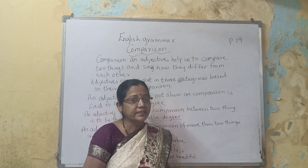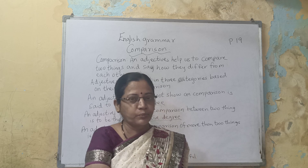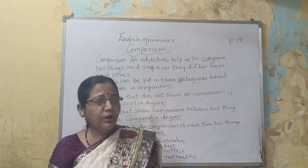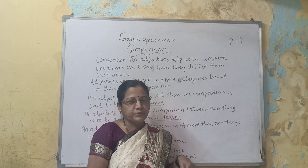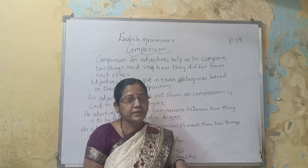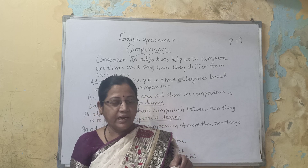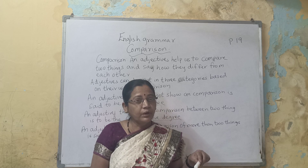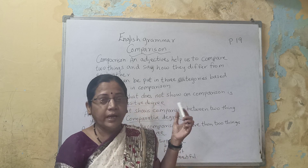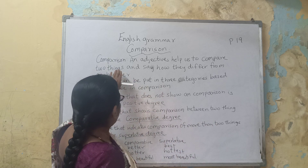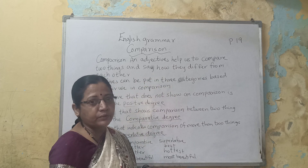Adjective means describing. For example, 'He is small' — this is an adjective, because it is describing that he is small. If you have any vegetable, it can be thick or hot. So 'hot' is an adjective describing that vegetable. This is an adjective. An adjective which helps us to compare two things and say how they differ from each other — that is known as comparison.